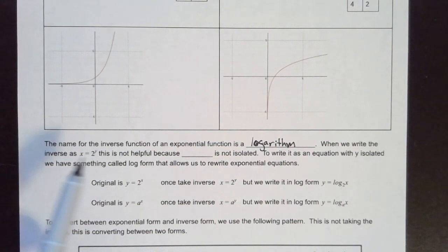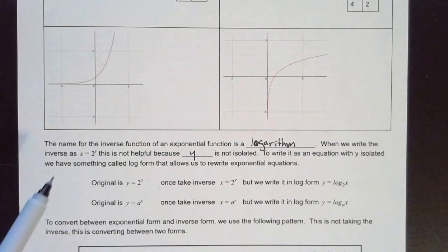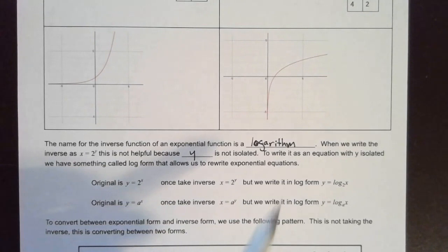The name for the inverse function of an exponential function is a logarithm. When we write the inverse as X equals 2 to the Y power, this is not helpful to us because the Y is not isolated. To write it as an equation with Y isolated, we have something called log form.